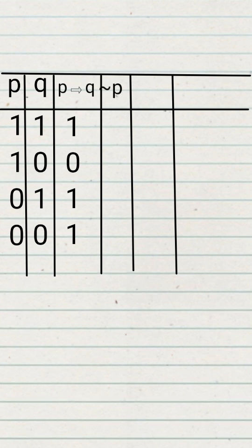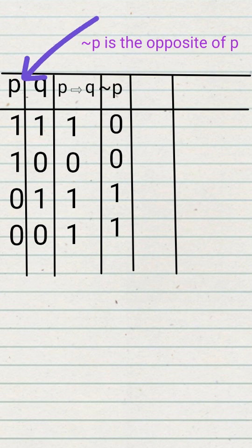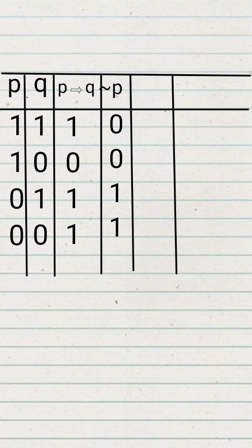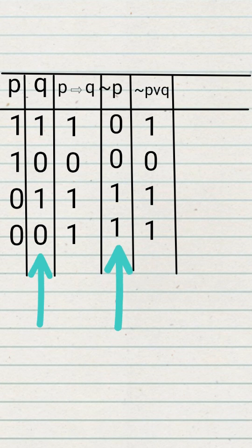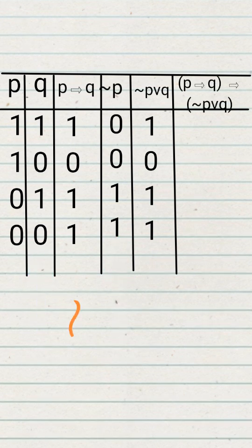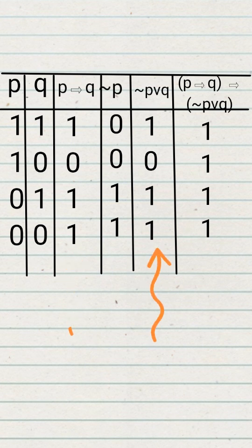Next, find not P — the opposite of P — which gives 0, 0, 1, 1. Then compute not P or Q: since there's a truth in each row it gives 1, 0, 1, 1. Comparing P implies Q with not P or Q, we get 1, 1, 1, 1 — confirming it is a tautology.